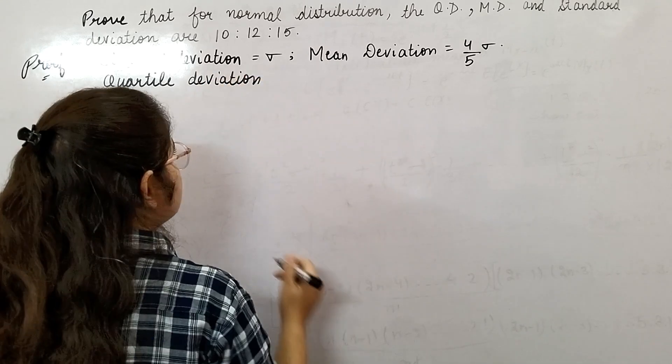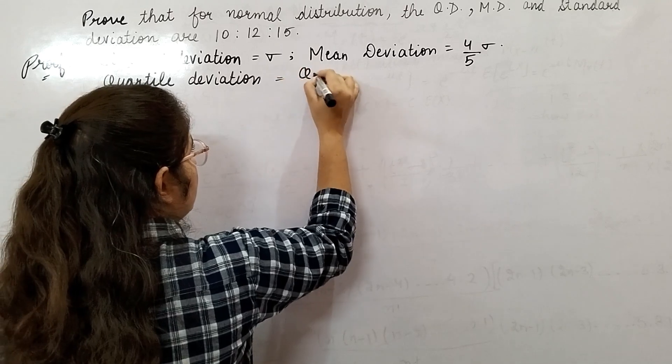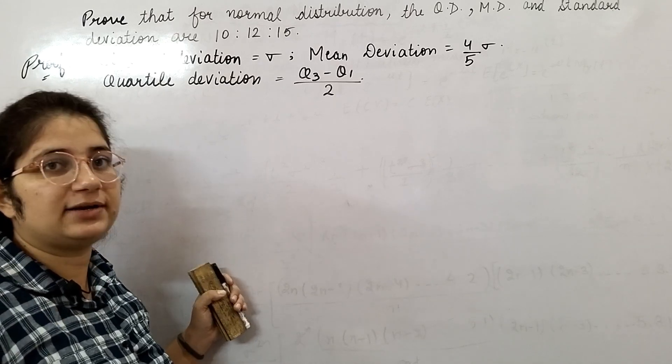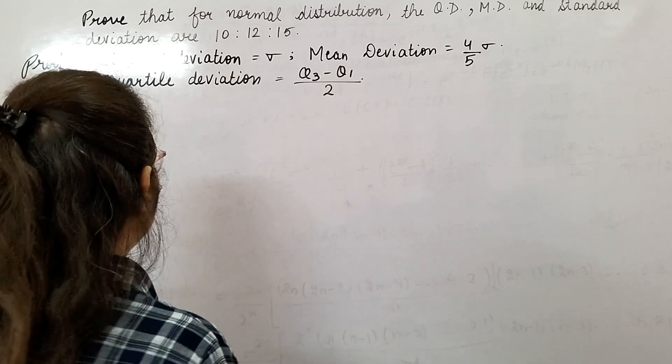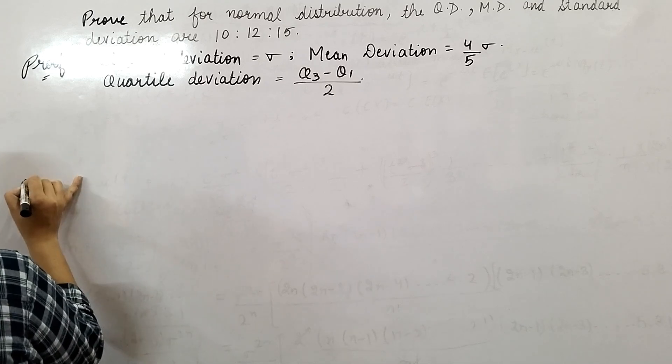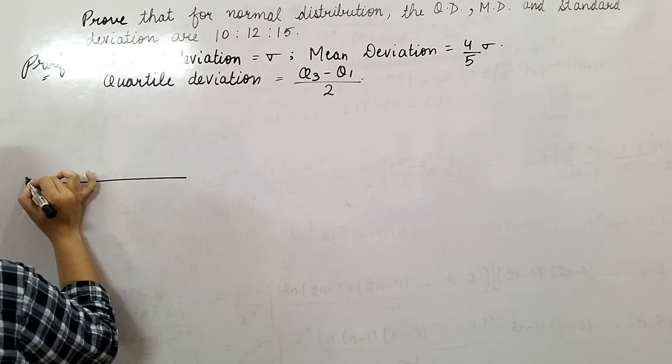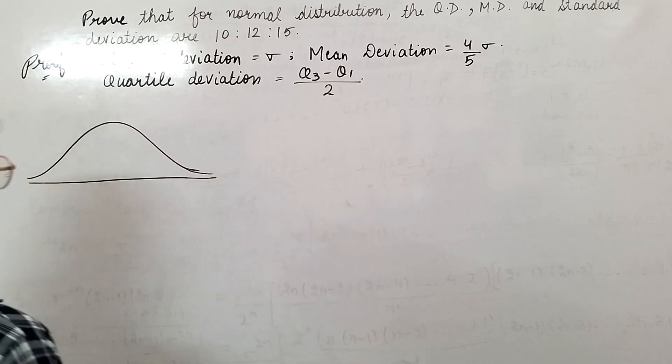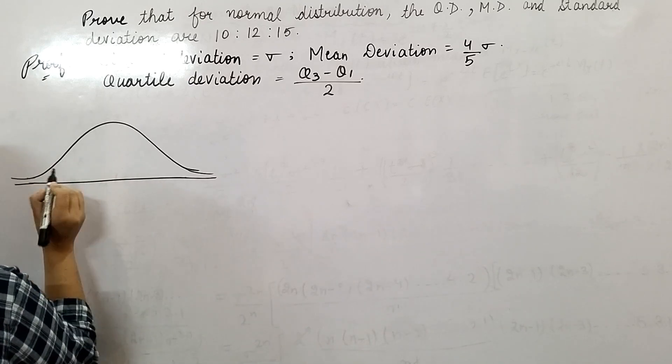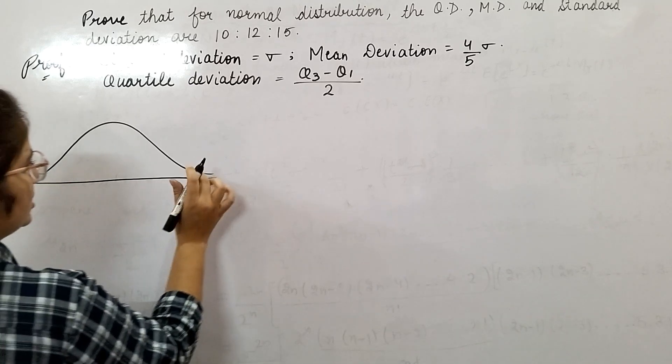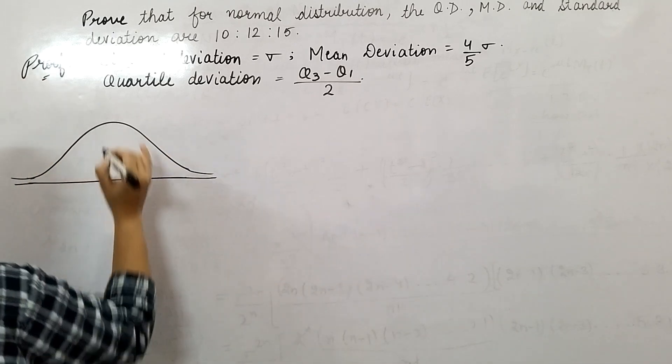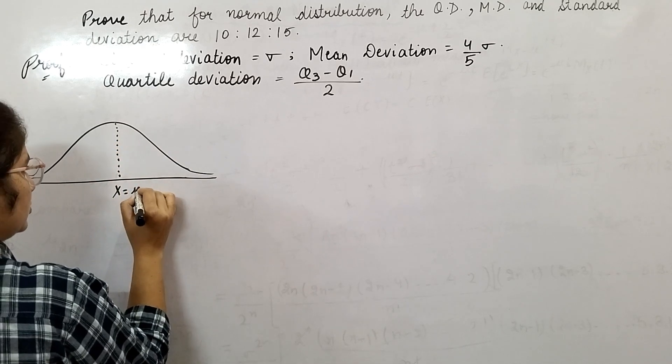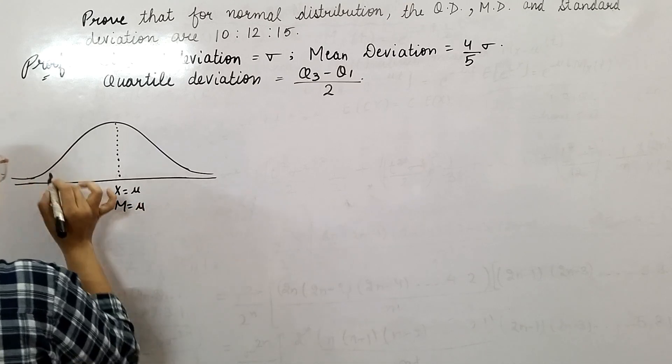Quartile deviation is given by q3 minus q1 by 2—third quartile minus first quartile divided by 2. Now firstly, I will make a figure of the normal curve.